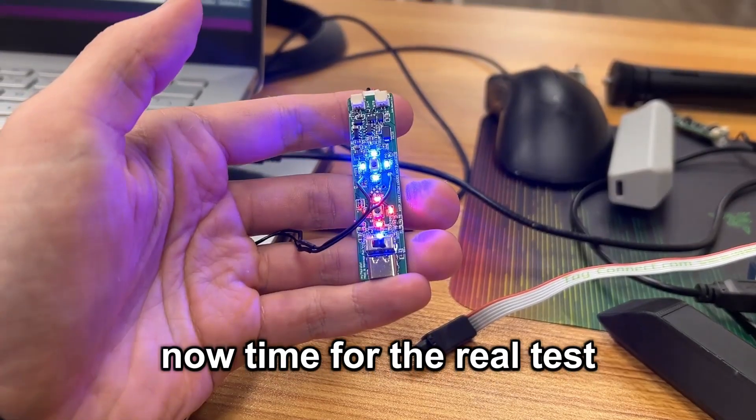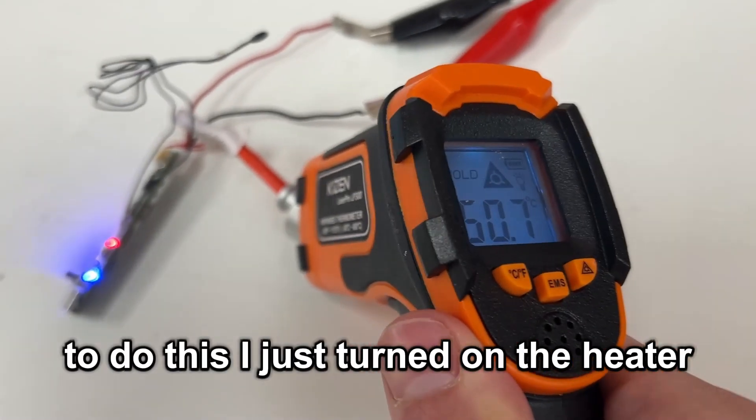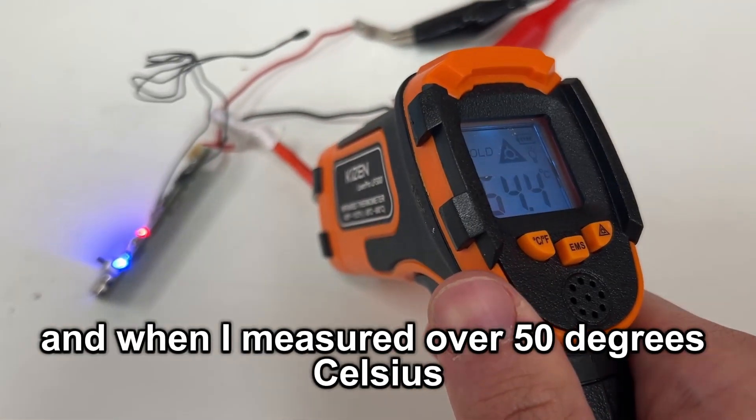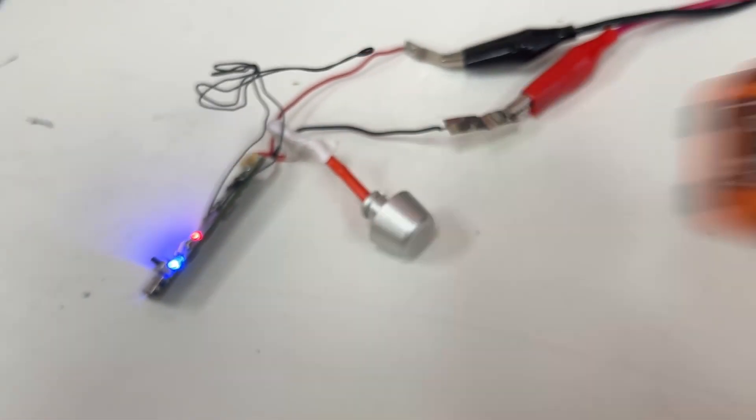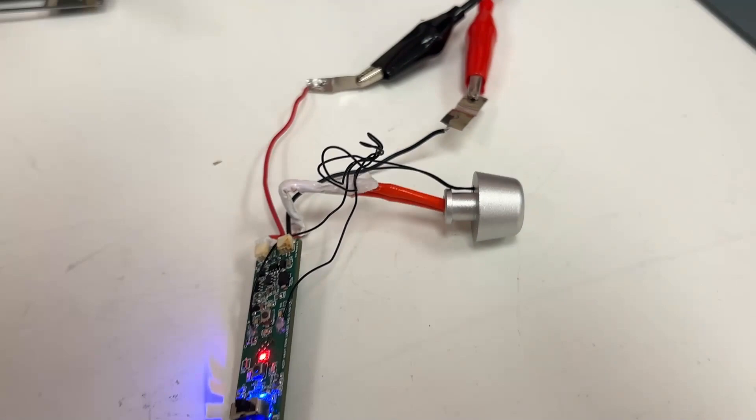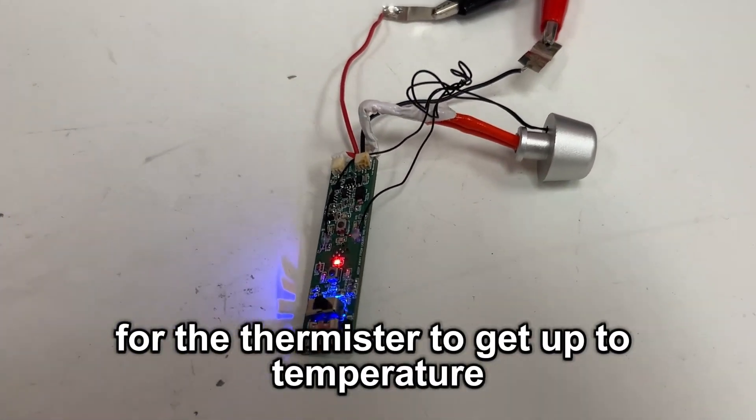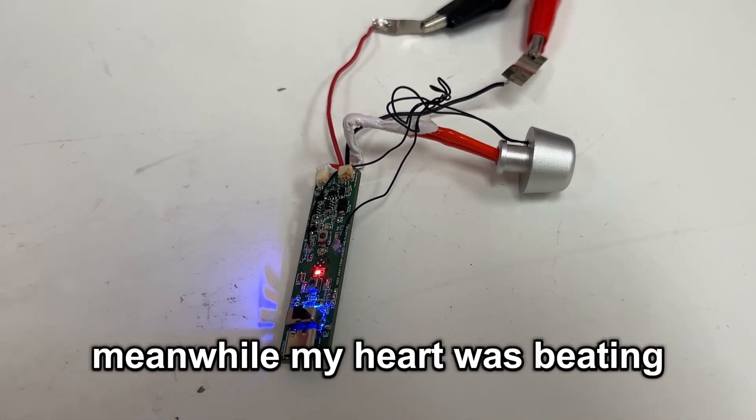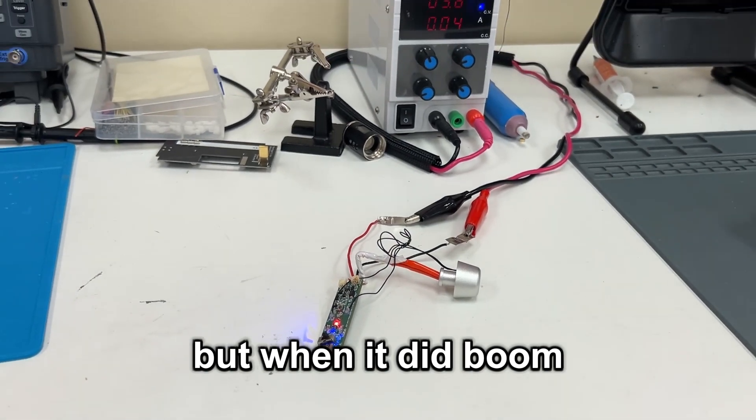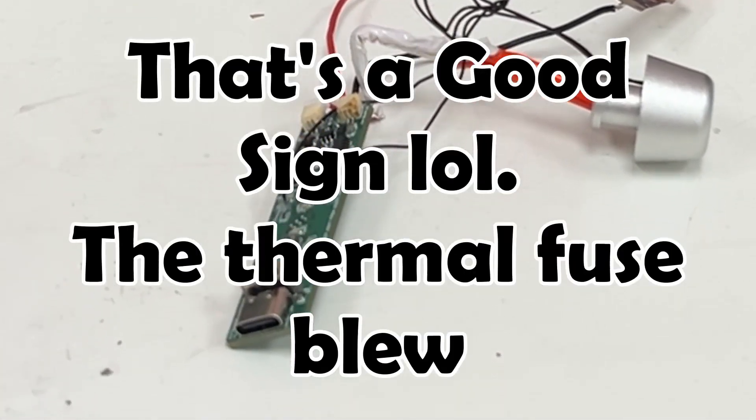Now, time for the real test. What will happen when we get too hot? To do this, I just turned on the heater, and when I measured over 50 degrees Celsius, I stuck the thermistor in. It took a couple seconds for the thermistor to get up to temperature. Meanwhile, my heart was beating. But when it did, BOOM! Everything shut off. Hallelujah.